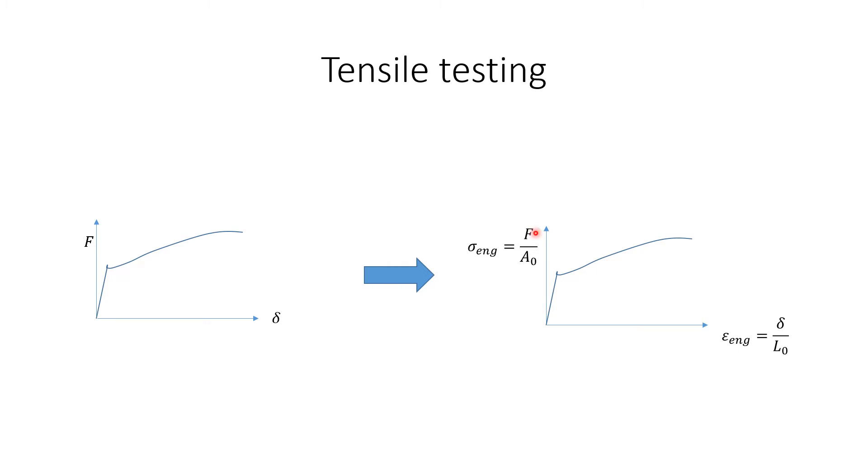From the output of the test, the engineering stress strain curve is obtained by normalizing the force by dividing it by the initial cross-sectional area and dividing the extension by the initial gauge length.